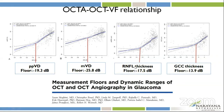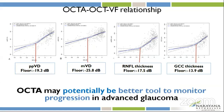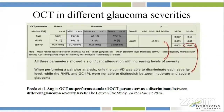In the study, the RNFL thickness and the GCC floor levels were at minus 17.5 and minus 12.9. But compared to that of OCTA, the floor level was much lower at minus 25.8. This means that OCTA may be potentially a better tool to monitor progression in advanced glaucoma.